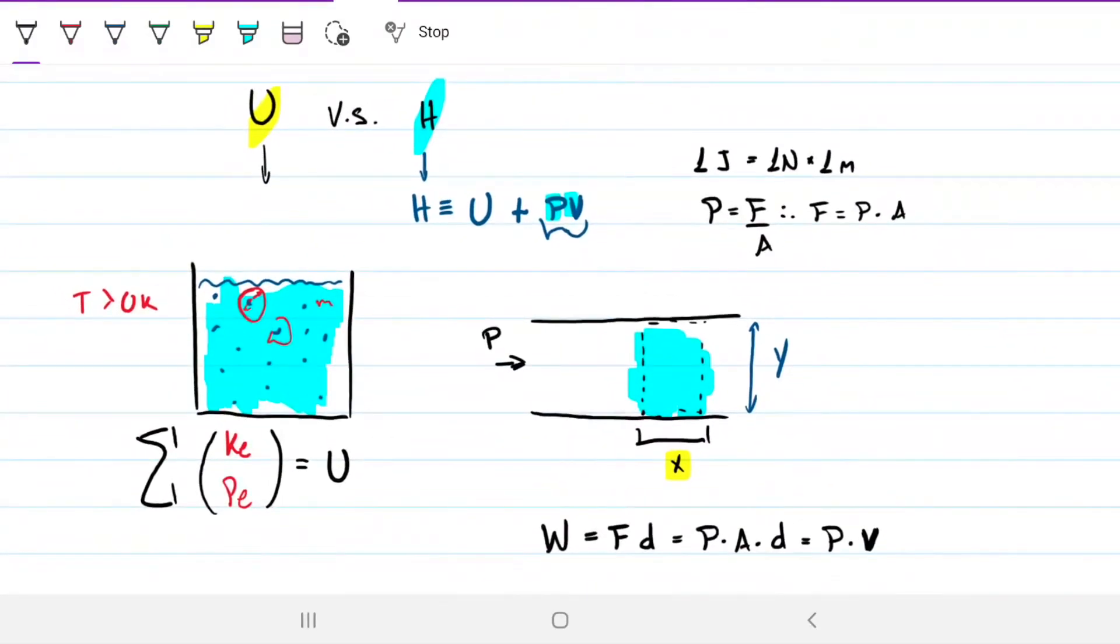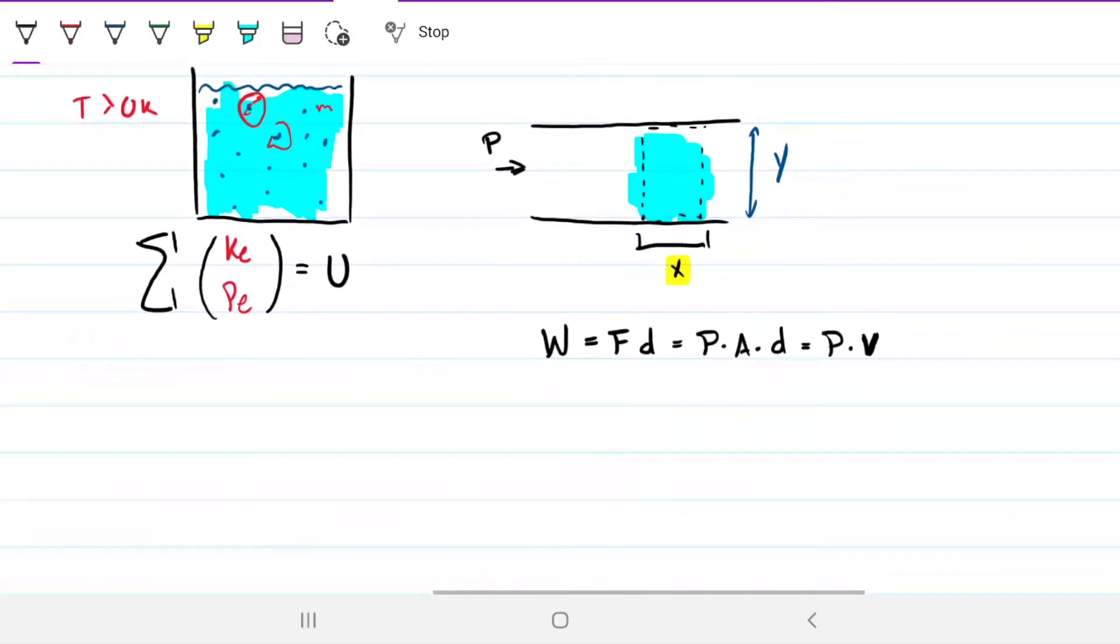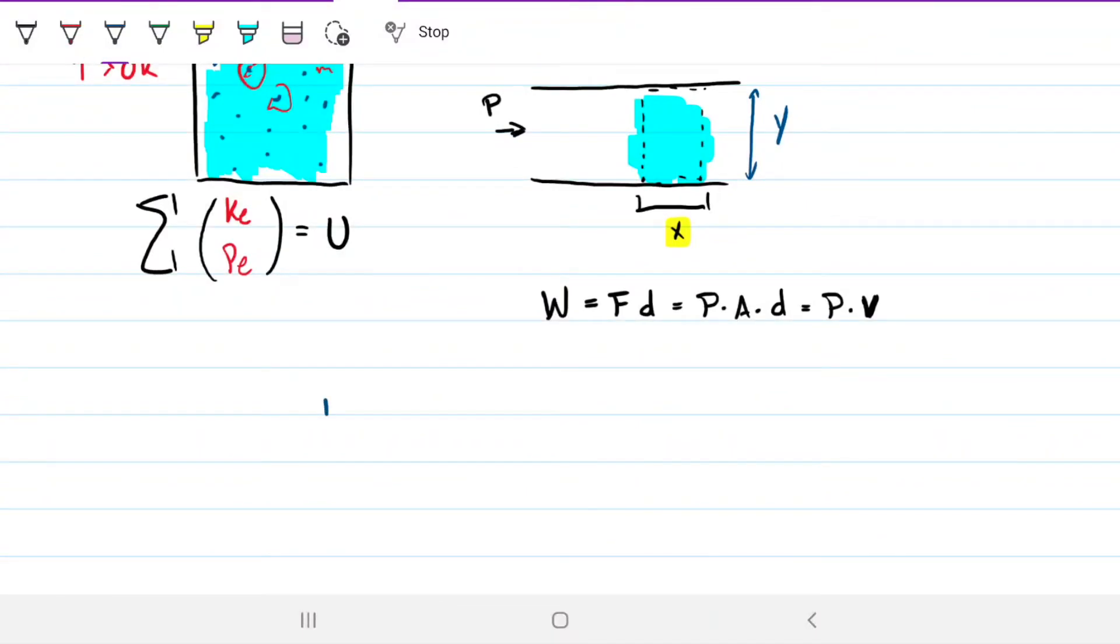So one thing that we can take from the definition is that first of all, the enthalpy, because of this definition, because enthalpy involves the internal energy, the enthalpy is always going to be greater than internal energy. So that's our first conclusion. The enthalpy is always greater than internal energy. That's actually useful in a lot of cases for you to remember.